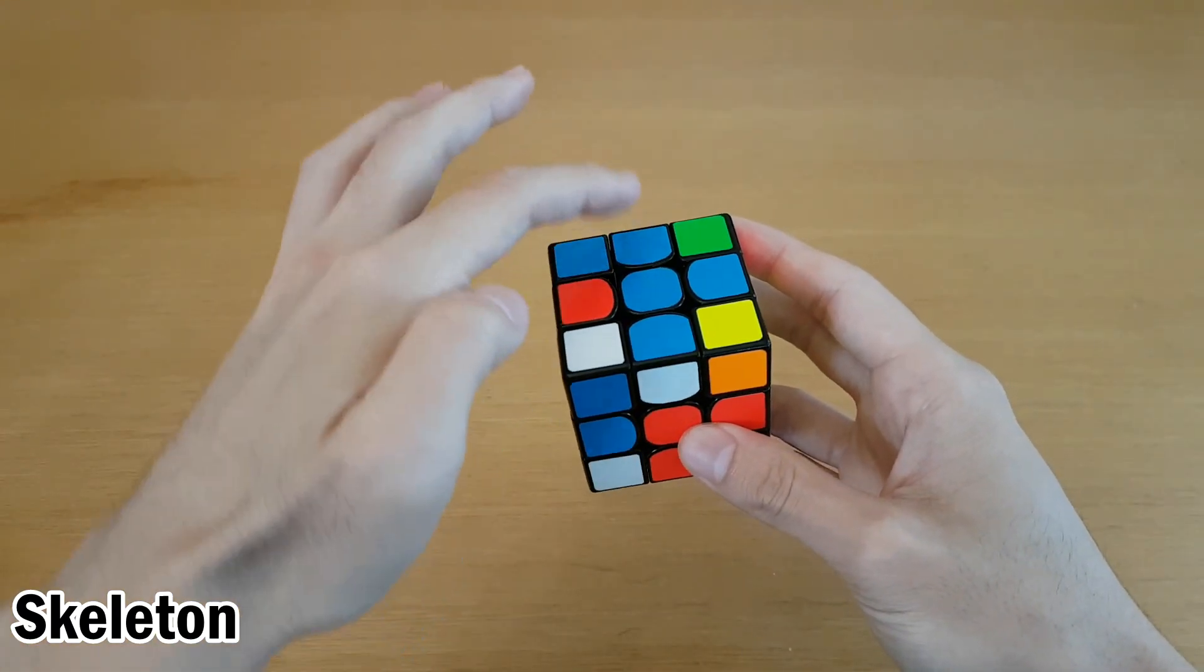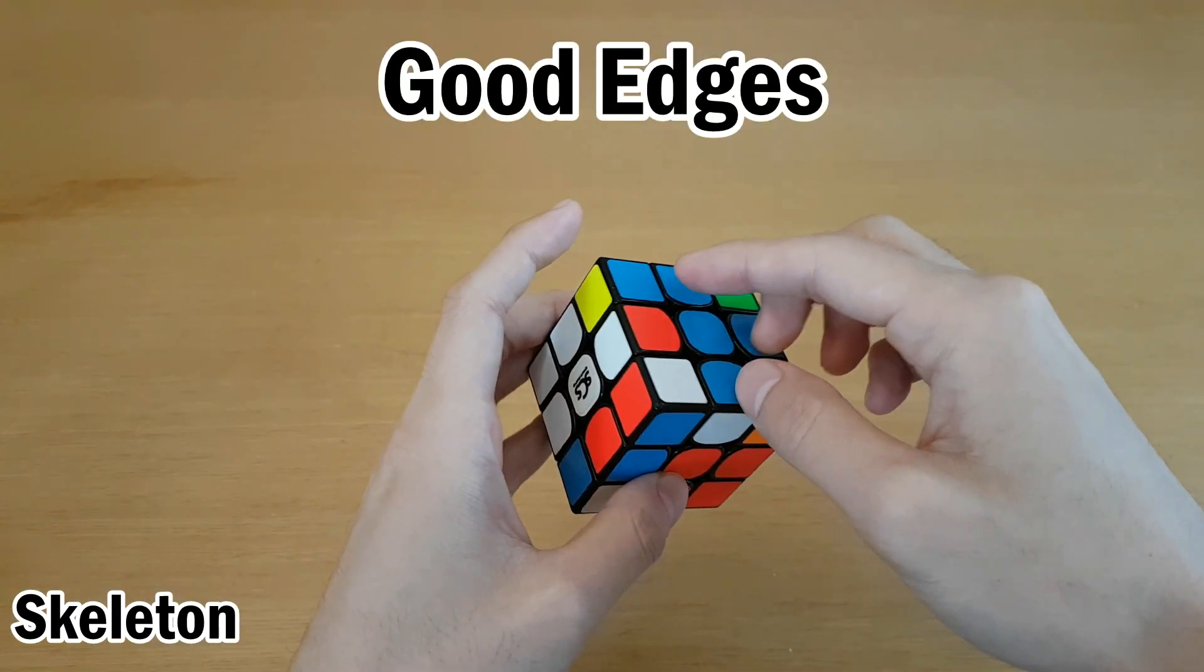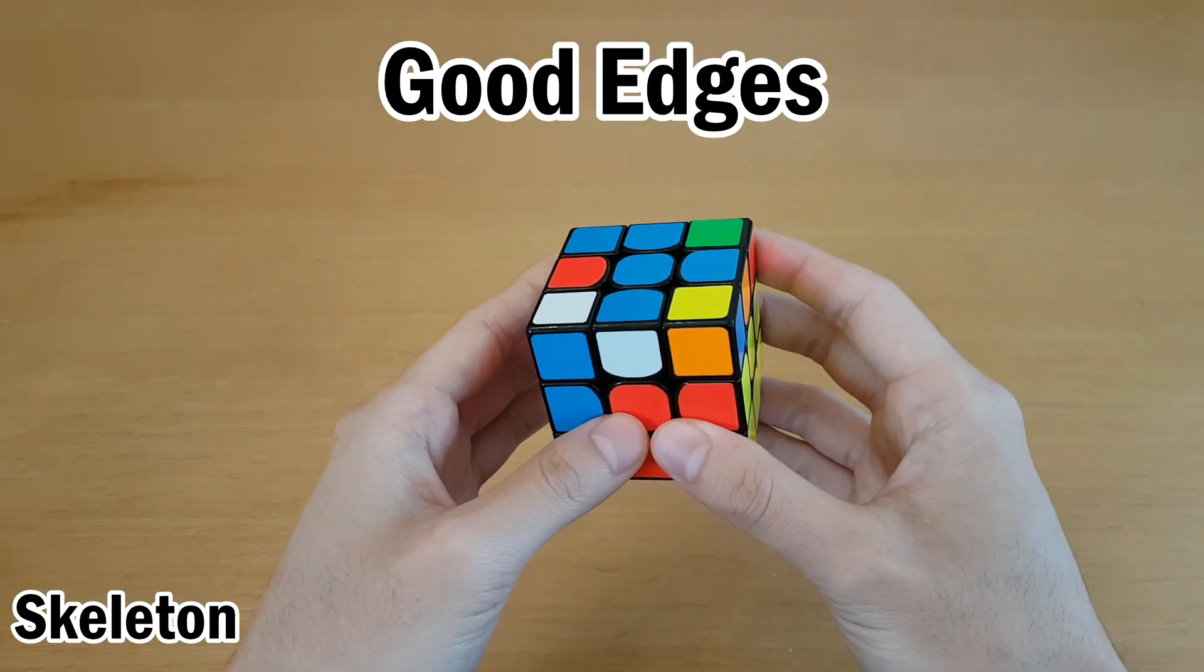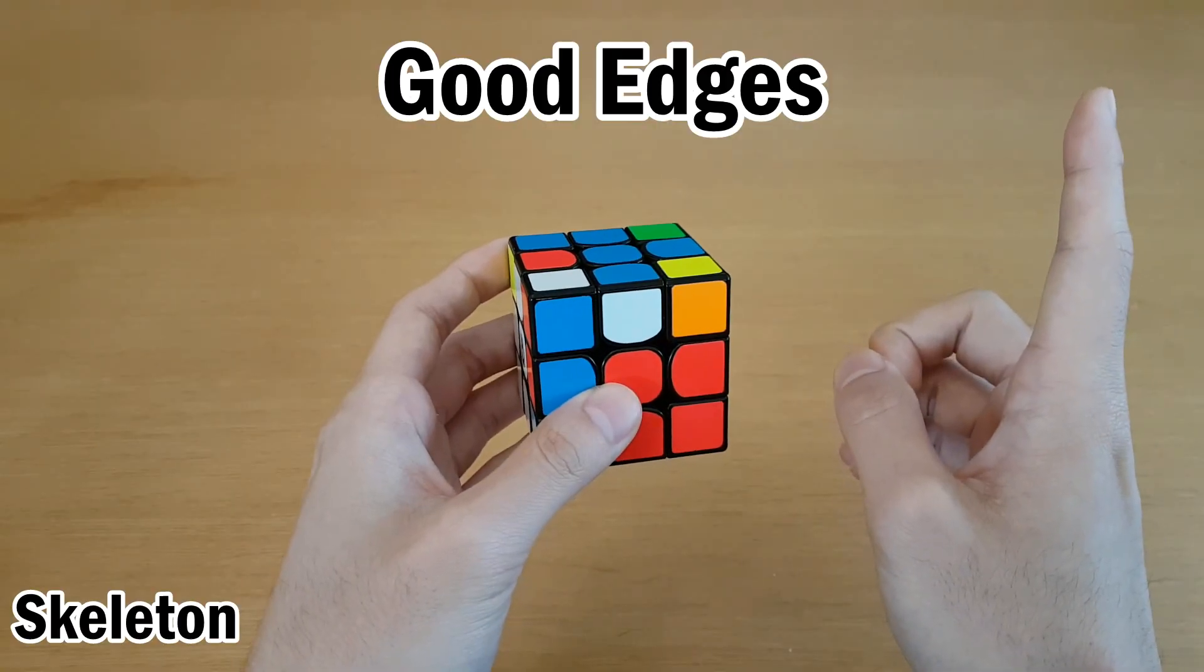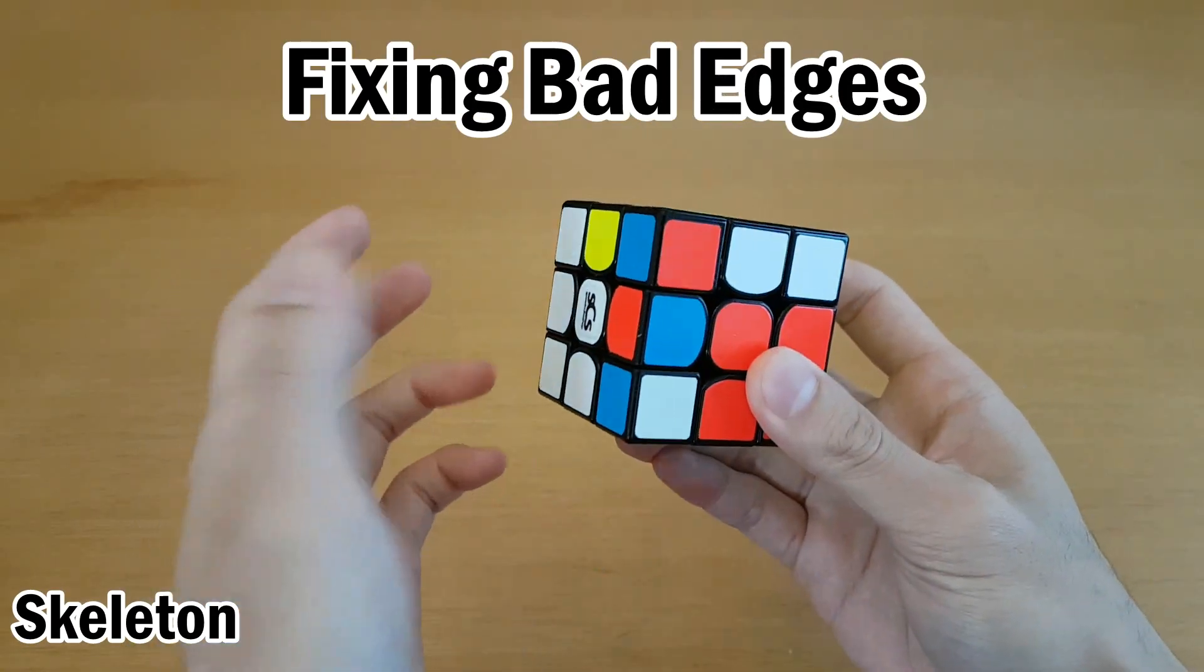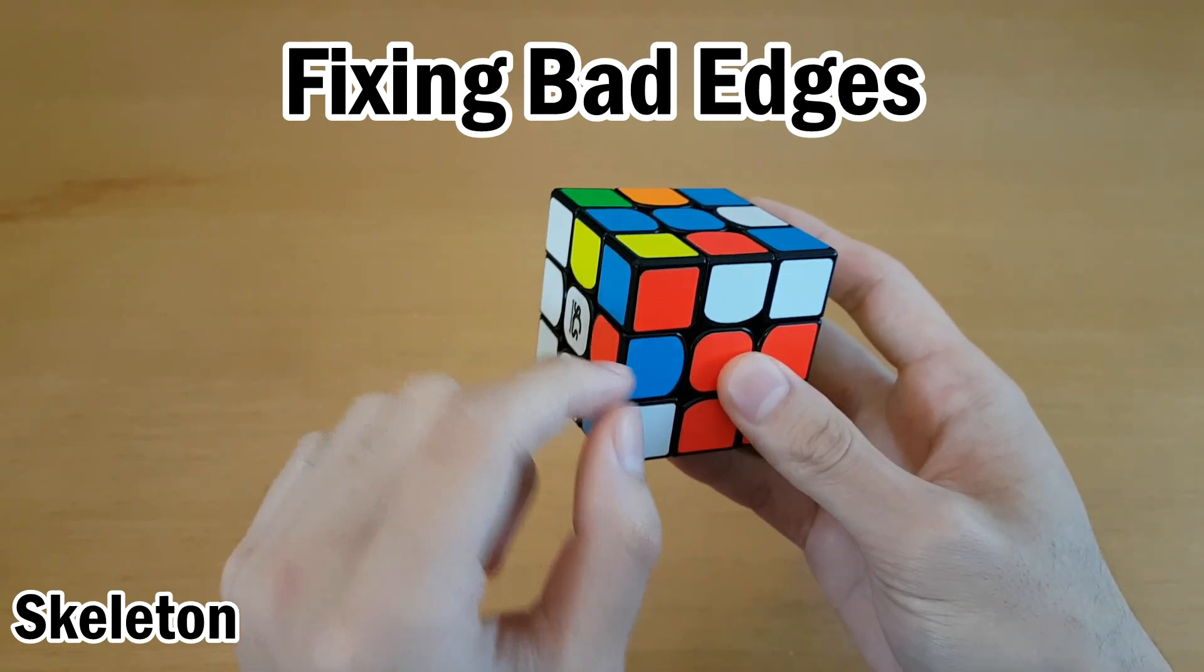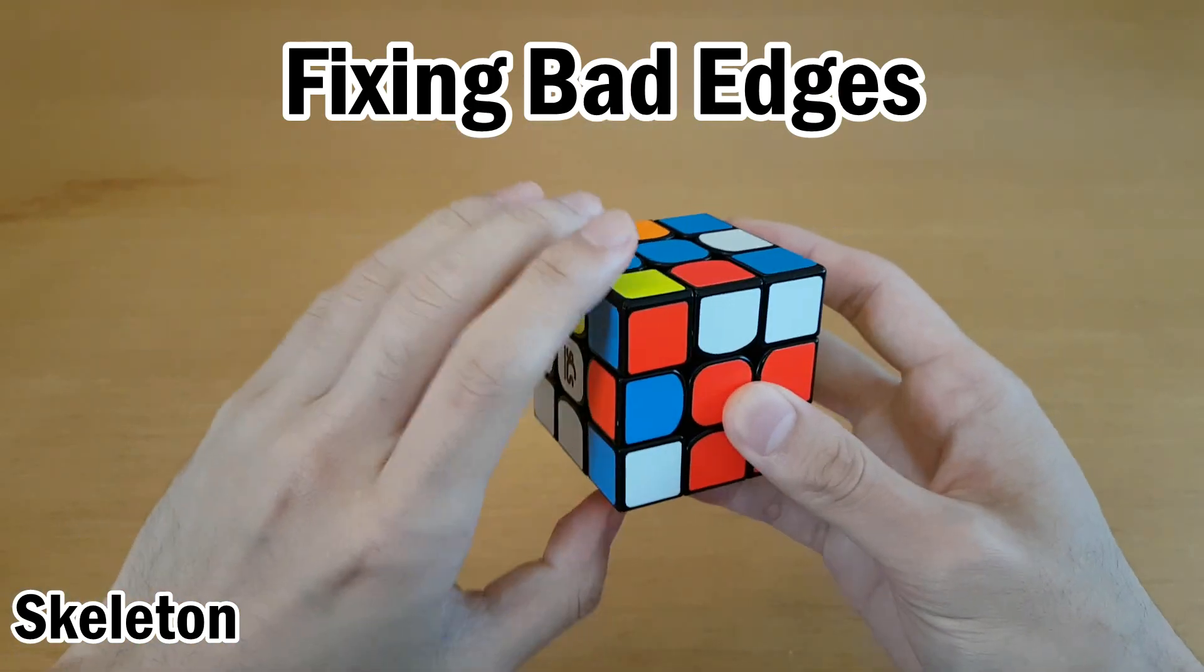If your top color is blue, you want all the blue edges facing up. So these are oriented, or good edges, and they'll already be good edges if you've done edge orientation at the beginning of the solve. The explanation is in this video. If you get to this stage and some blue edges are flipped, if you end up with a blue edge here, move it to the top such that blue ends up on top because that's our top color.